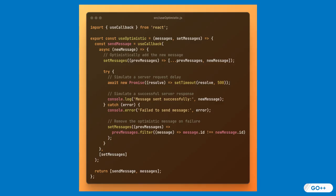You have probably used UseOptimistic in your React apps, but have you ever stopped to ask how it actually works under the hood? In this video, we will simulate the internal behavior of UseOptimistic with real code, giving you a deeper understanding of the logic and mechanisms behind React 19's powerful new hook. If you want to go beyond implementation and explore the inner workings, this is the video for you. Stick around.